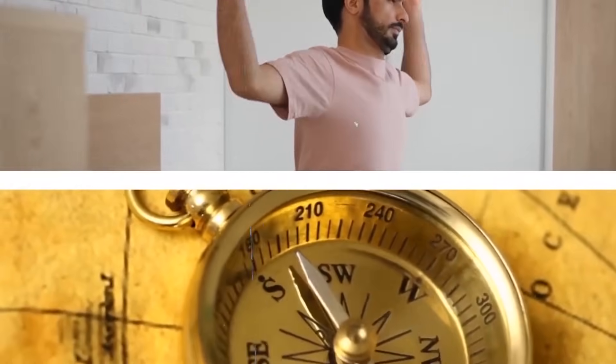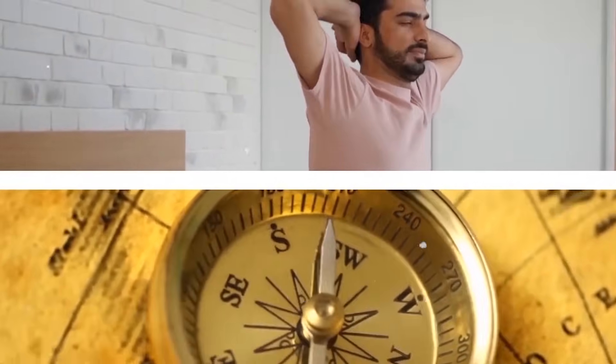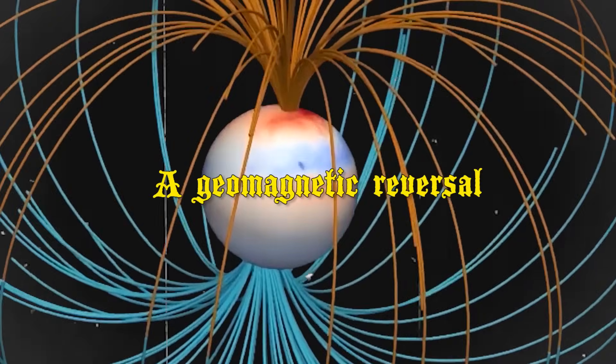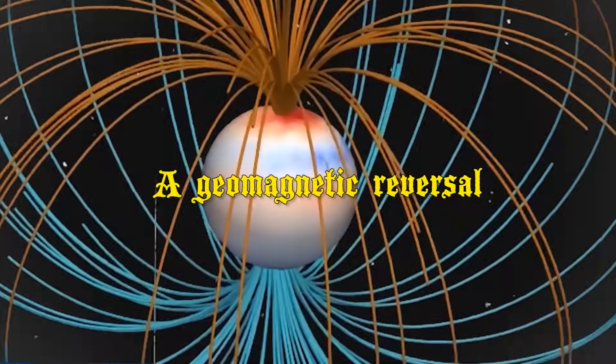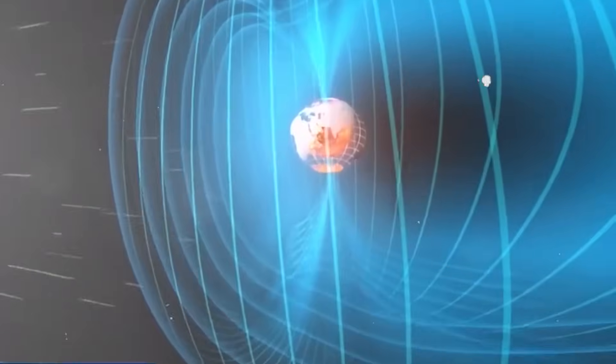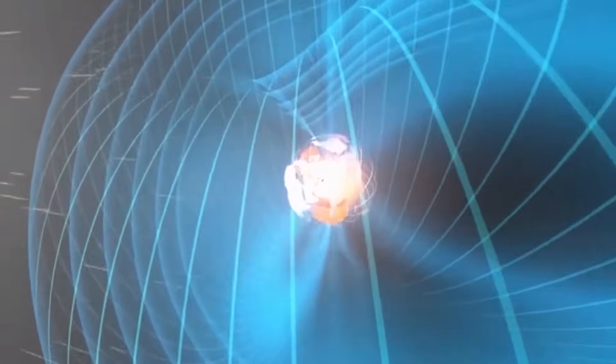Imagine a world transformed overnight, where compasses suddenly direct us south. A geomagnetic reversal, where Earth's magnetic poles switch places, poses a grave danger.